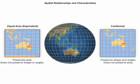Two key properties considered when creating map projections are equivalence and conformality. Equivalent or equal area map projections preserve the relative size of areas they depict. Conformal map projections preserve shape and angles.